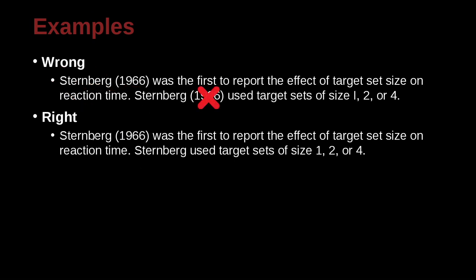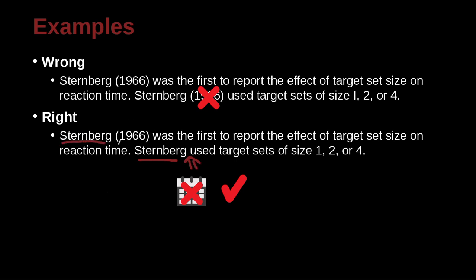So here we have Sternberg (1966), and here we just say Sternberg — we can skip the date because of this special case. We already have the name, we already have the date, and it's parentheses just on the year.